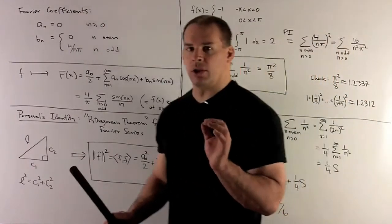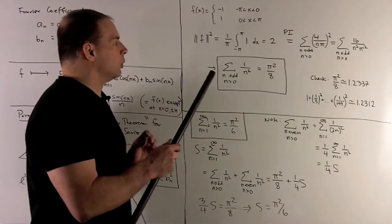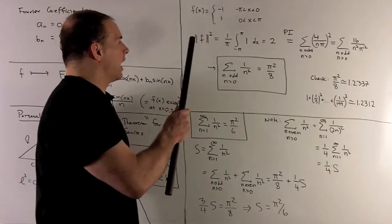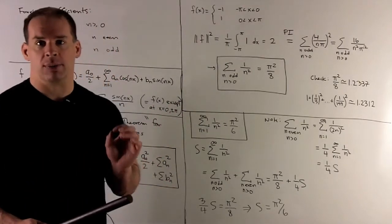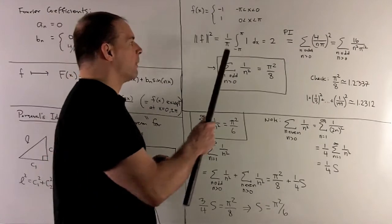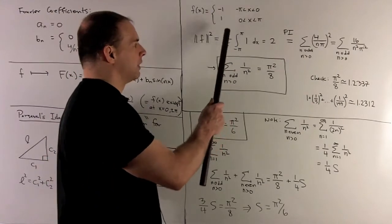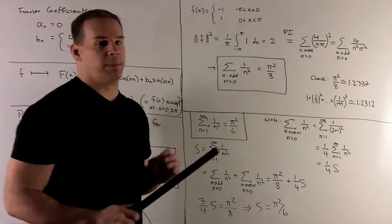Let's take a look at our special case. First, I want to take the length squared of our function. When I square it, that minus 1 becomes a 1. So, it's just going to be the integral from minus pi to pi of 1. Then we divide by pi. So, it's going to give me a 2.